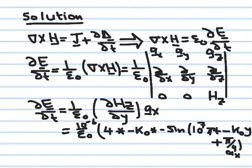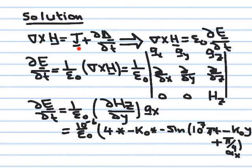I will use the first curl equation — curl H equals J plus partial D partial t — to solve for the electric field. I know H, I can compute the curl, and then integrate in time to get E. Notice they did not tell us anything about a current, so J, the impressed source current, is equal to zero. This is not the case if you have an antenna with an excitation current.